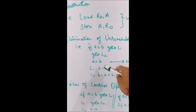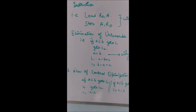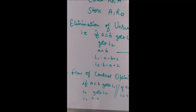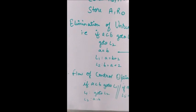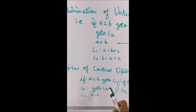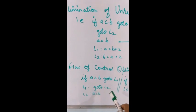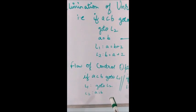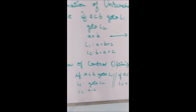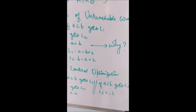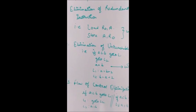Similarly, there is another technique called flow control optimization. Here, a jump goes to an instruction that immediately jumps again. For example: 'if a is less than b, go to L1', and at L1 it jumps again to L2. This is unnecessary — we can directly jump to L2, changing the instruction to 'if a is less than b, go to L2'.